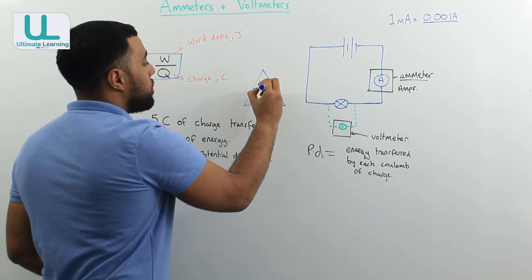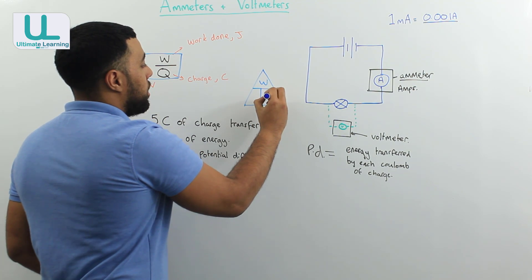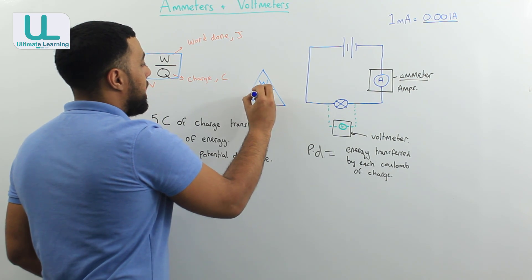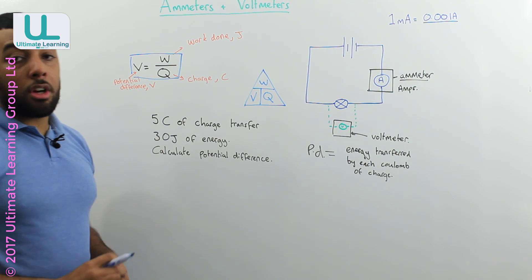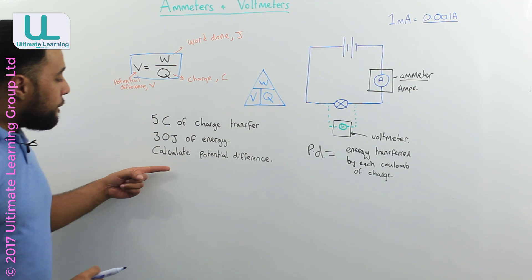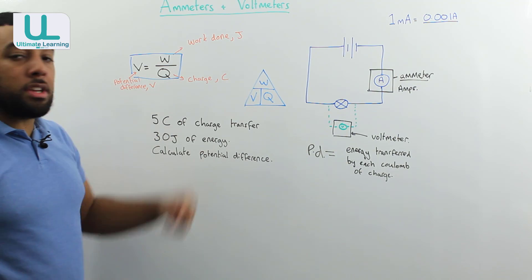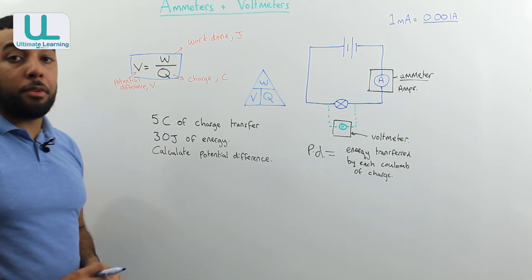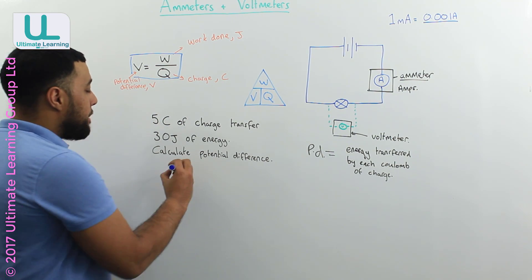Where work done would go at the top, charge and potential difference at the bottom. For this question though, I don't need to rearrange it, and it should be quite straightforward. So I write my equation out,